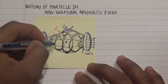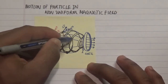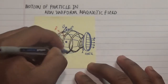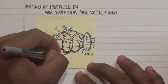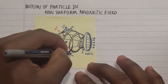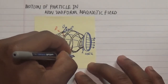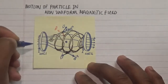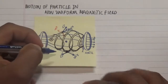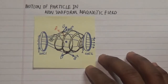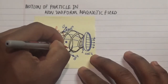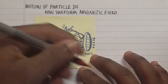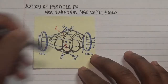Let's pick another point. At this second point, the velocity is pointing in one direction while the magnetic field is pointing in a slightly different direction. Applying the right-hand rule, we see that the force is pointing in this other direction — that is our force at the second point.